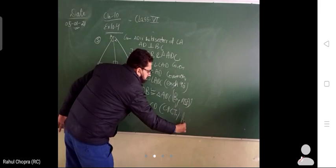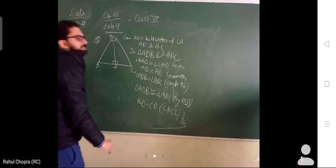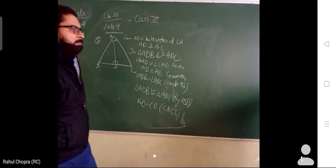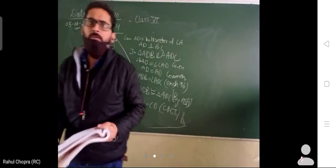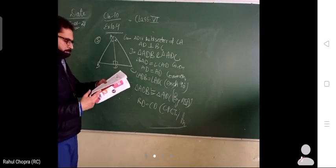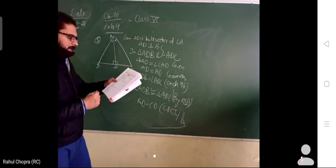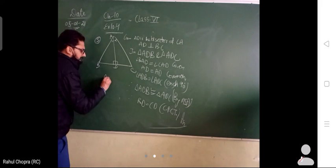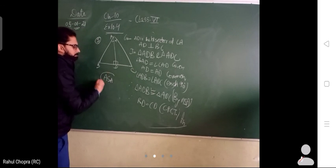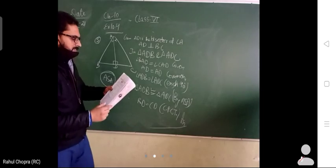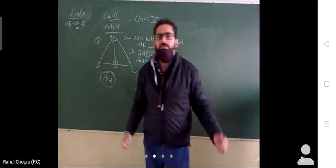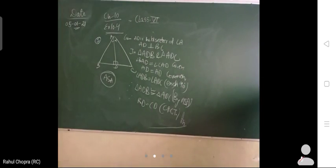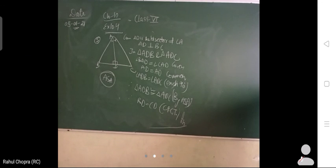Question 6 is also very similar to the earlier questions — you have to apply only the ASA congruence rule. So this exercise is now complete. That's all for today, thank you.